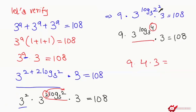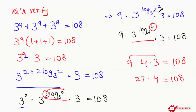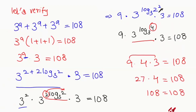Applying the identity 3 to the power of log base 3 of x equals x, we get 9 times 4 times 3 equals 108, and 27 times 4 equals 108, and 108 equals 108. So the left hand side is equal to the right hand side, and the value of a we found is absolutely correct. Thank you so very much for watching. Hope you like my video and feel free to subscribe anytime.